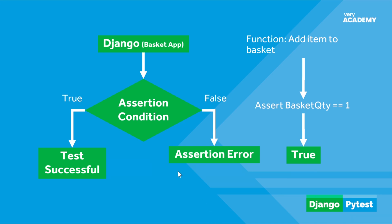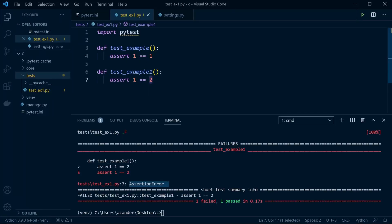The general idea is: set up the required input data, call a function or method from the source code, then use an assert statement to confirm the result matches expectations. For example, imagine a basket in a Django e-commerce store — we add an item to the basket, then assert that basket quantity equals one. If true, we've tested that a small component of our application correctly adds items to the basket.